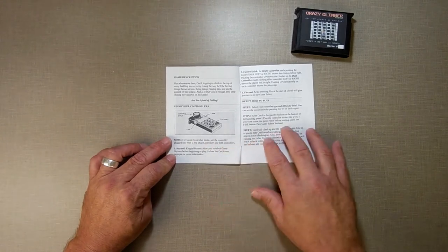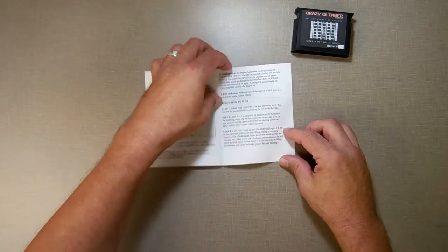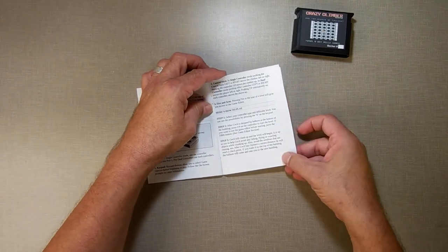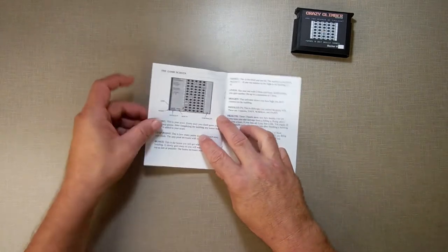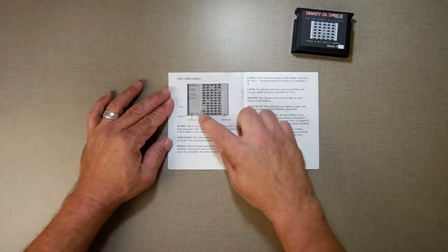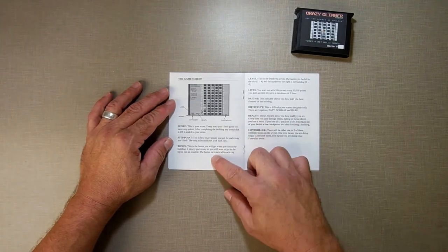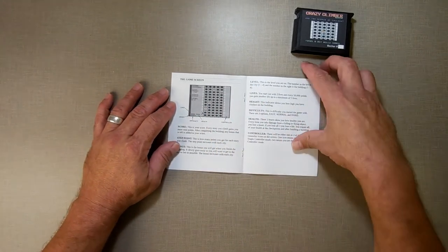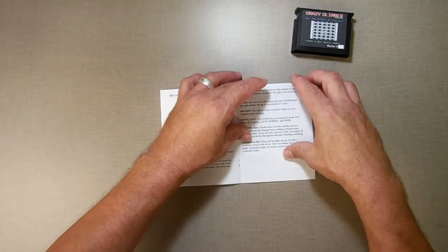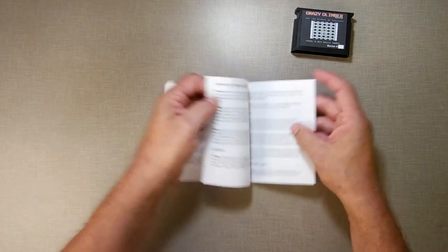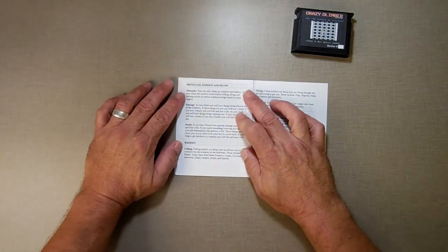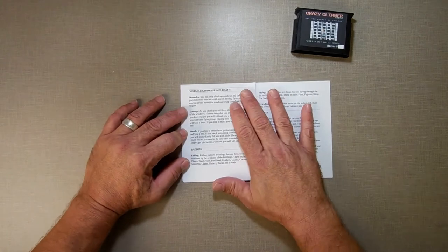Then you have how the controller is used for this game, explains the single and dual controller modes. Then how to play, what you need to do to play the game. Then the game screen, it gives you an idea of how the game screen works. The scores, the heights, the difficulties, and everything.